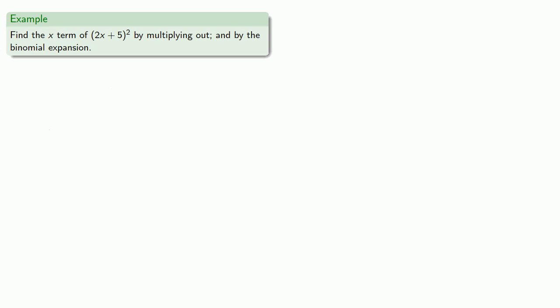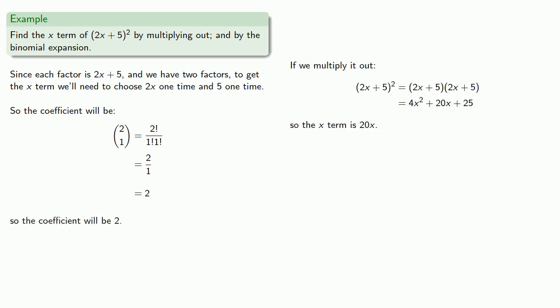In the binomial expansion, since each factor of our square is 2x plus 5, and we have two factors to get the x term, we'll need to choose 2x one time and 5 one time. And so the coefficient will be 2 choose 1, which will be 2. What's going on here? 2 and 20 are not the same thing.